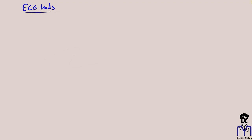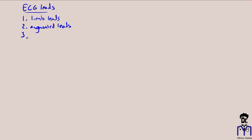There are three types of leads. The first type are limb leads. The second type are augmented leads. And the third type are our precordial or chest leads. We use these leads in order to have a look at the heart.